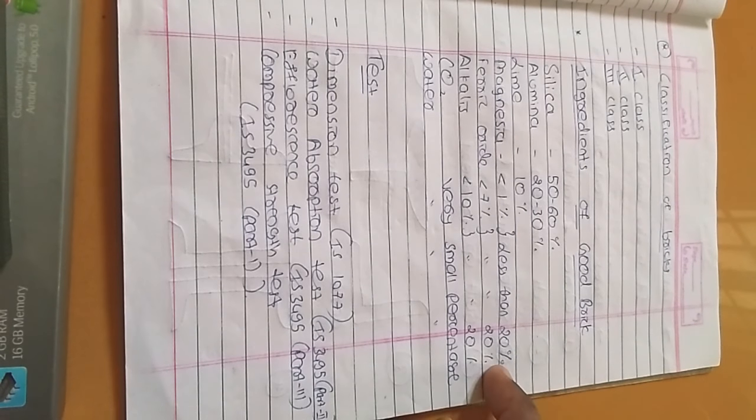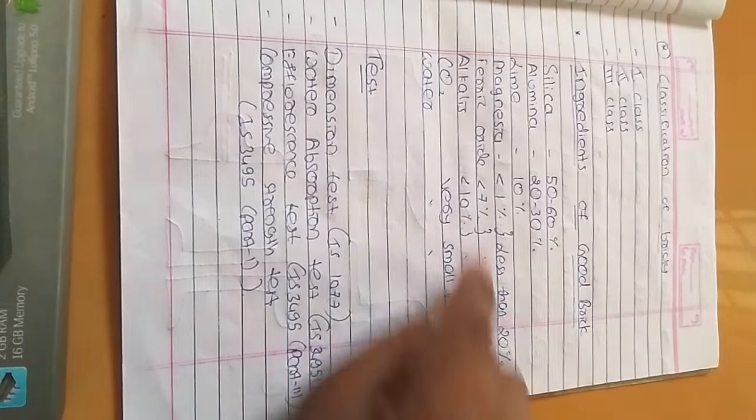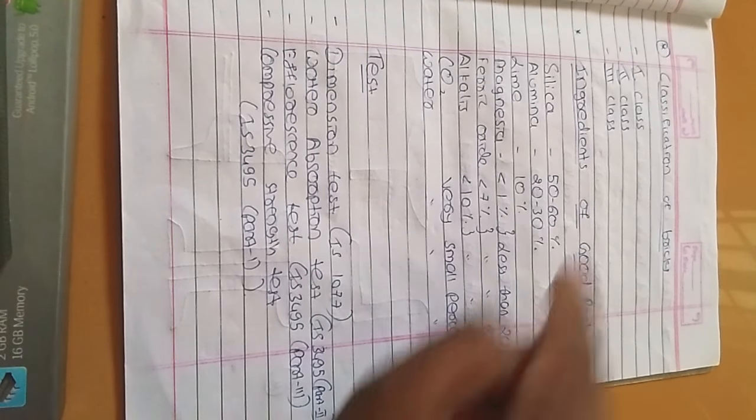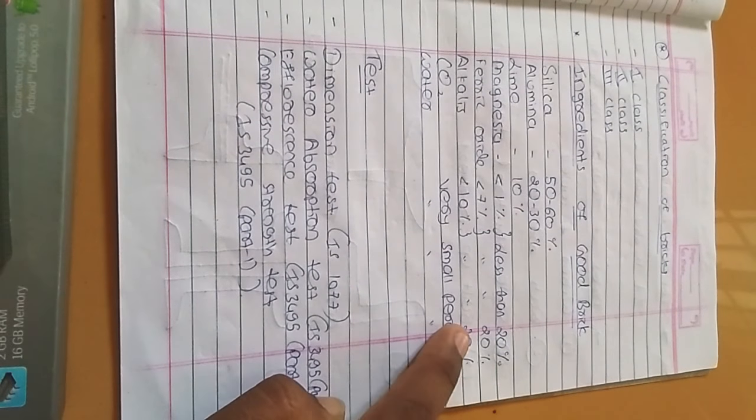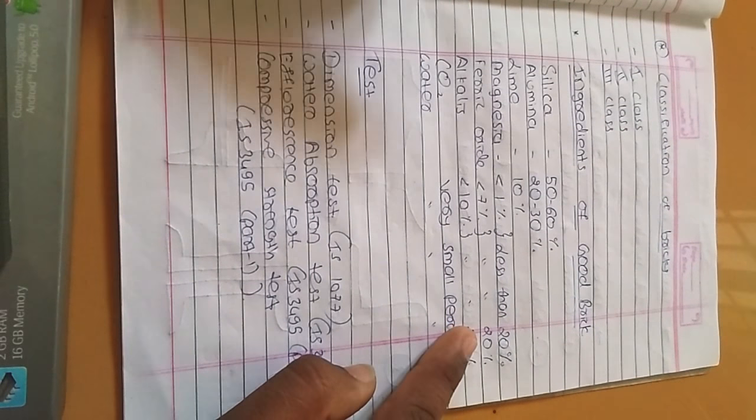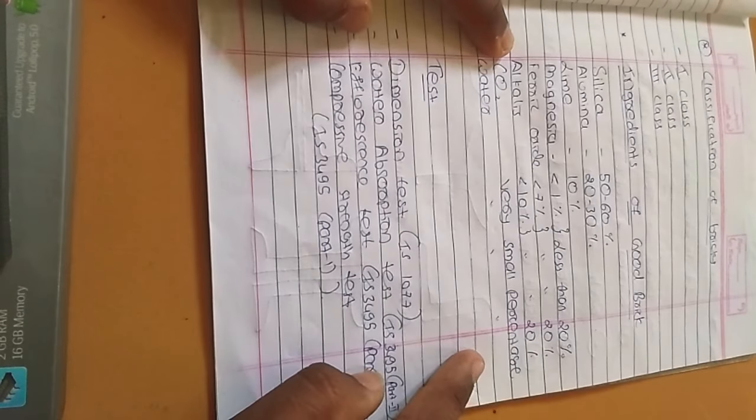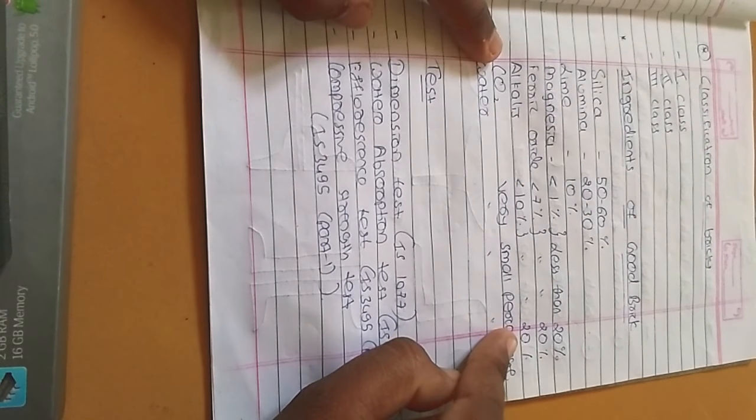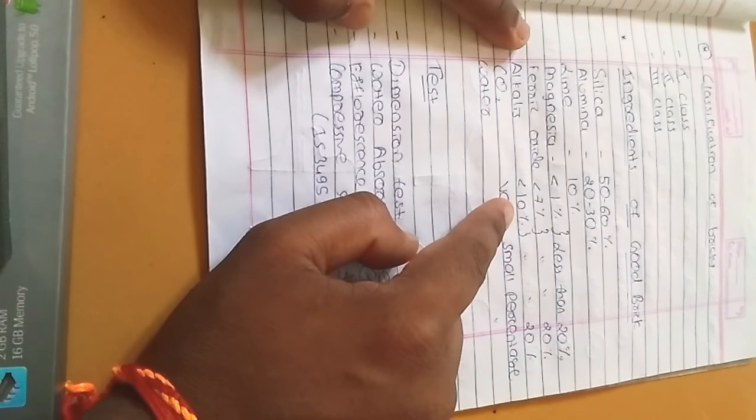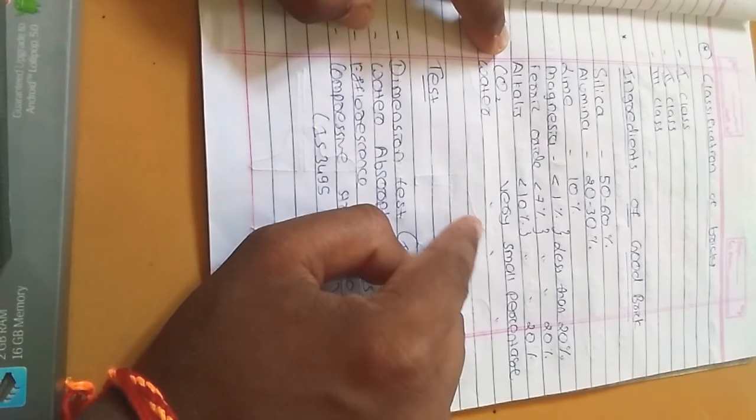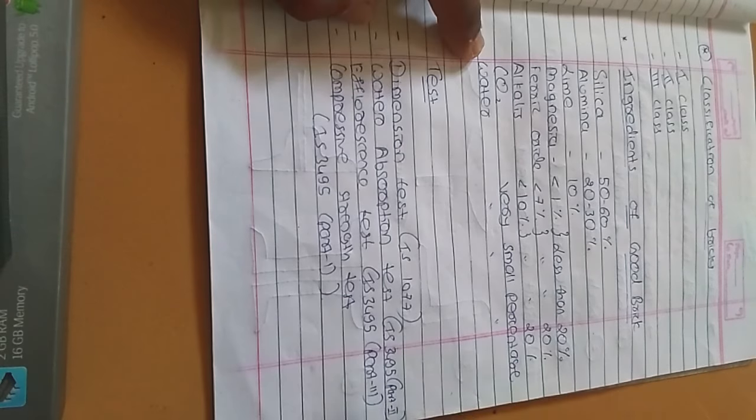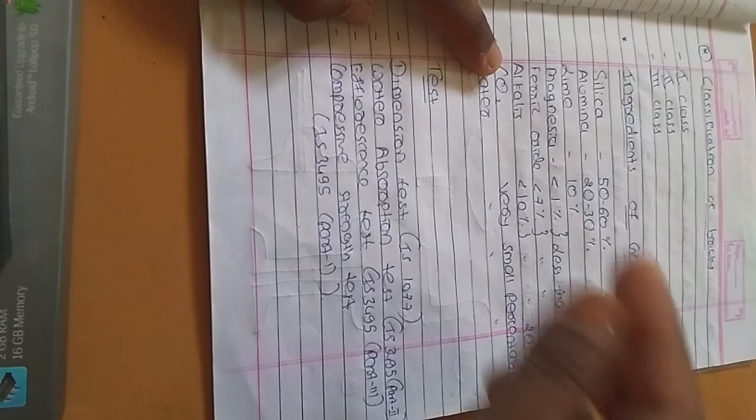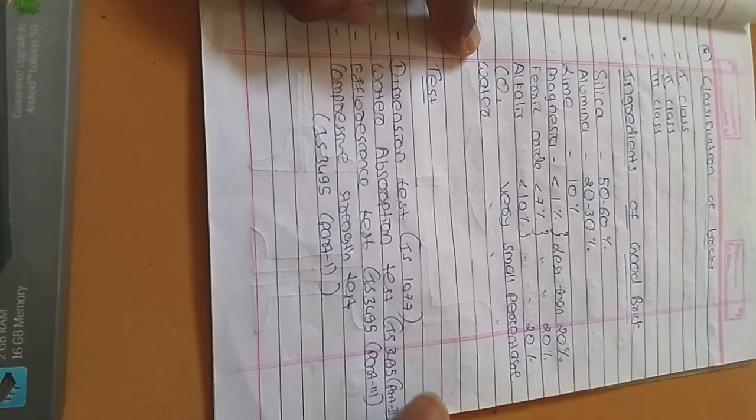Ingredients of good brick: silica 50 to 60%, alumina 20 to 30%, lime 10%, magnesium more than 1% and less than 20%, ferric oxide more than 7% and less than 20%, alkalis 10 to 20%, carbon dioxide is very low percentage - black part is mostly carbon dioxide. Water will be low percentage.